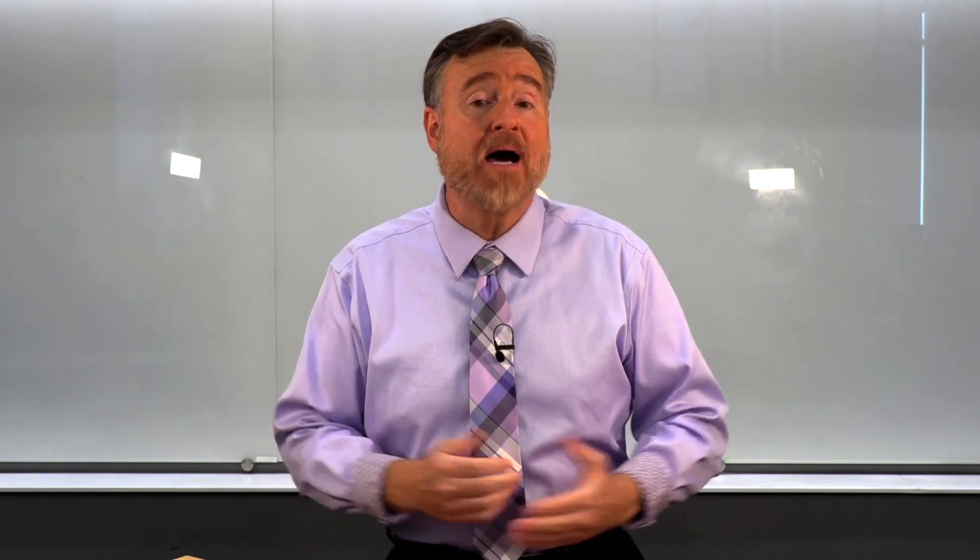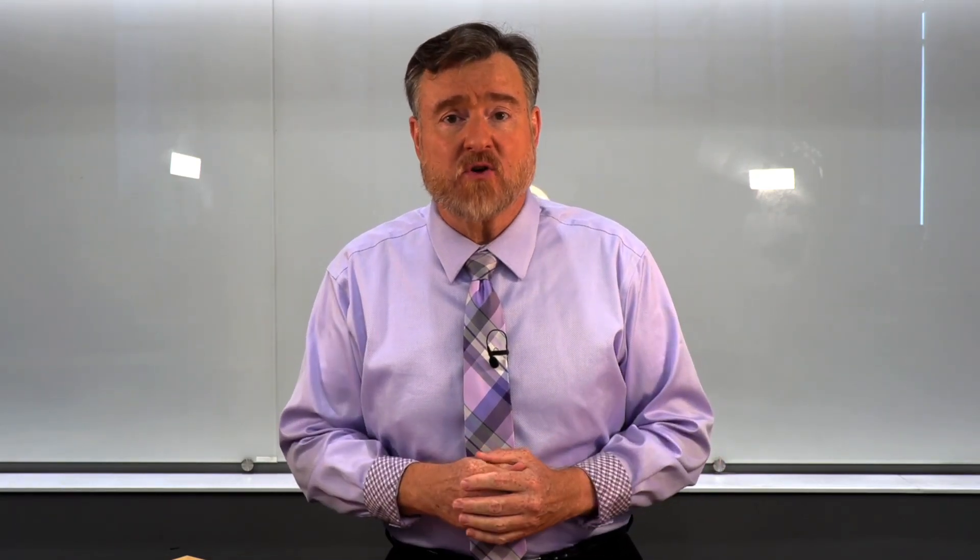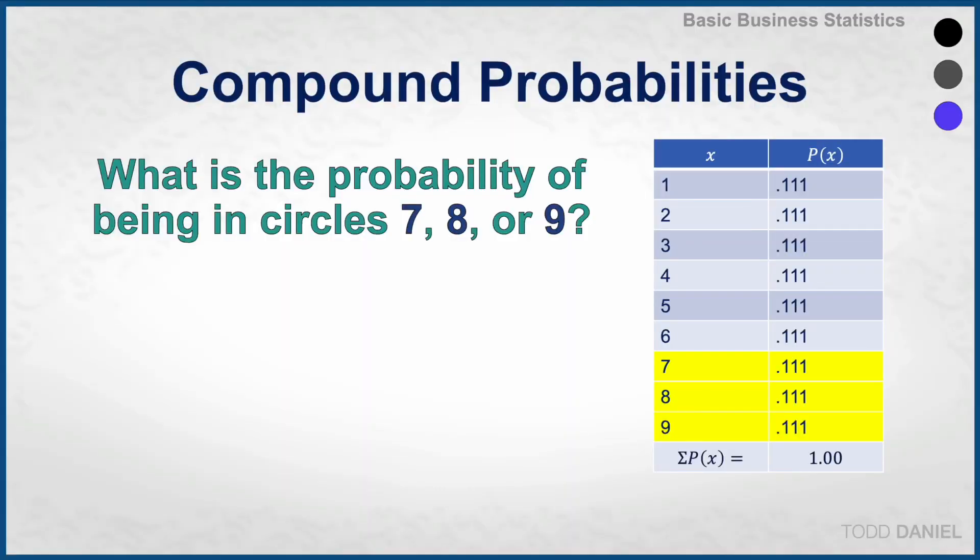However, compound probabilities allow us to answer questions like what is the probability of being in circles seven, eight, or nine. Our x variable can take on the values of seven, eight, or nine, which comprises three of the nine circles. Each outcome has a probability of 0.111. We add those together: 0.333 or one over three.